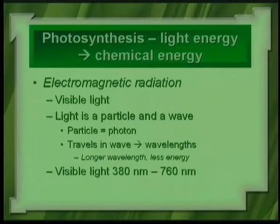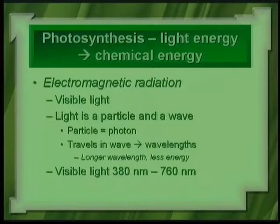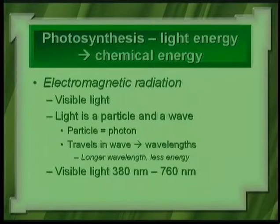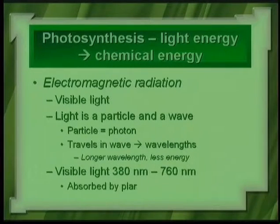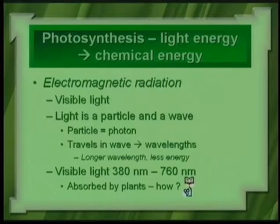Generally, visible light is the spectrum at which plants absorb light, going from 380 nanometers to 760 nanometers. Nano is a prefix that means billions, so these nanometers are billionths of meters — very, very small. Generally this visible light is absorbed by plants.